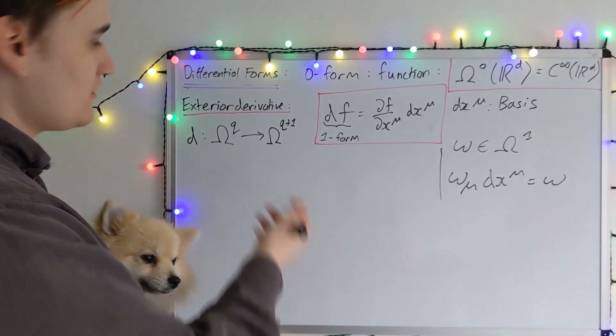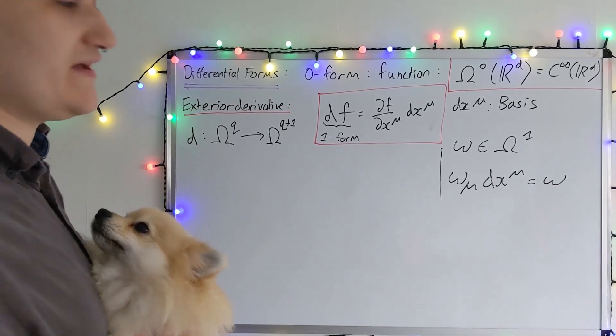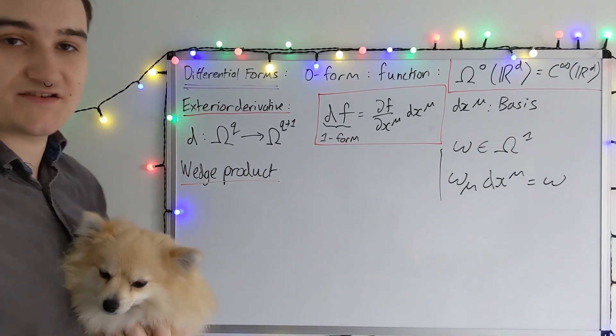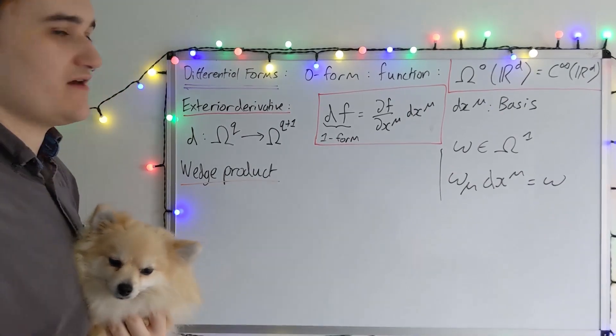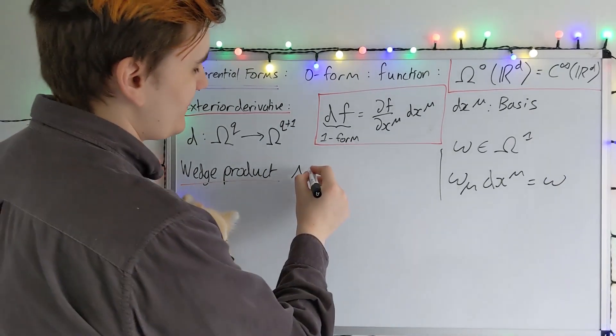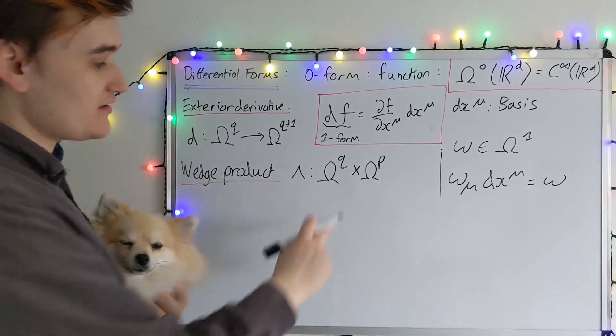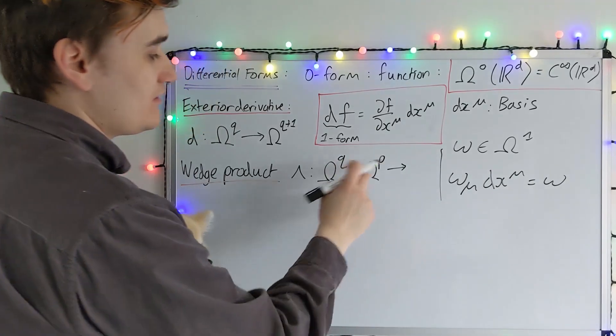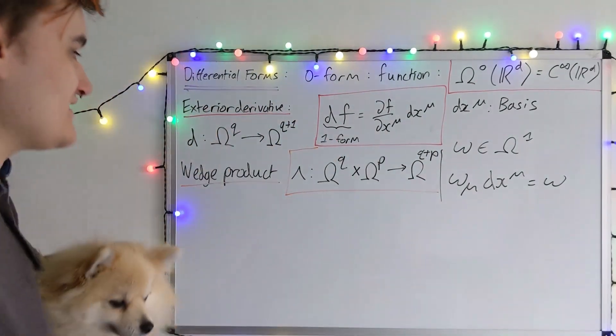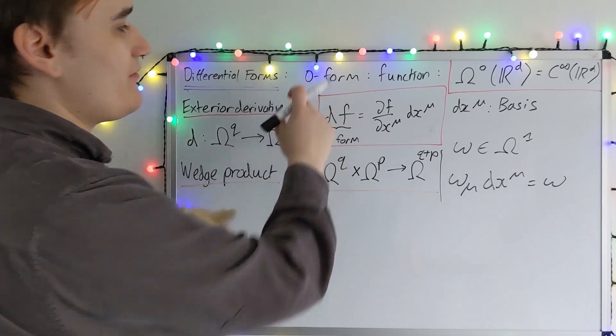OK, so from zero forms, we can form one forms using the exterior derivative. Now, in order to form higher degree forms, I'm going to need to introduce a final piece of machinery, which is known as the exterior or more commonly the wedge product. OK, so the wedge product, it's going to be a product. So it's going to need to map essentially a pair of inputs. So it's going to be a map, which is given the symbol wedge. From now the space of Q forms and a space of P forms. Since the wedge is a product, it has to map two inputs. And it's simply going to map a Q form and a P form into a Q plus P form. So now using these two operations, the wedge and the exterior derivative, we can essentially construct any degree form starting from our most basic zero form.